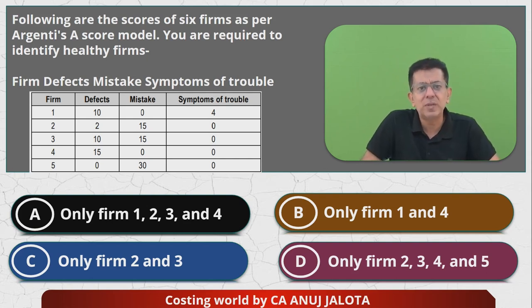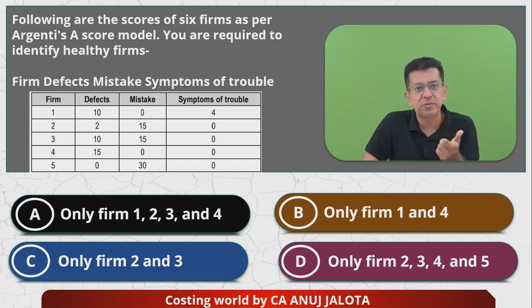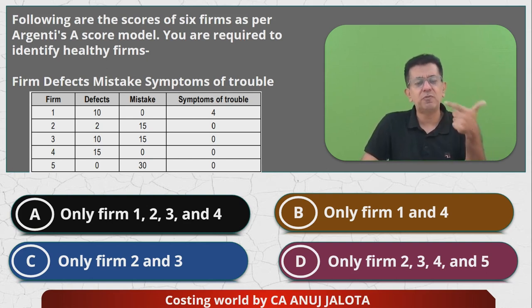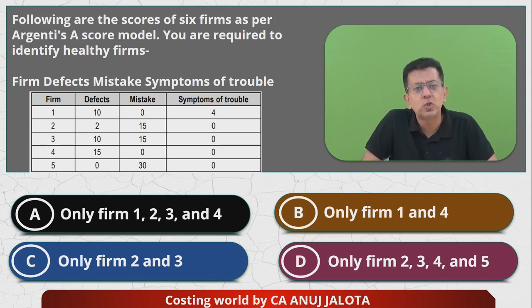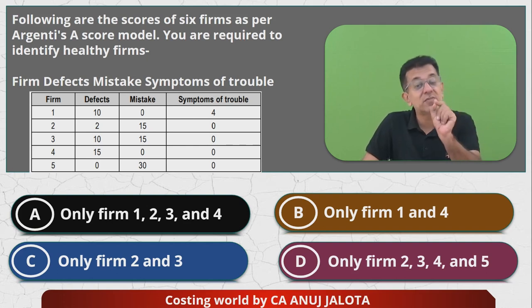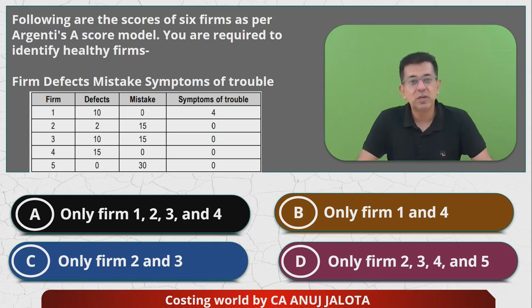Form 2 can be classified as healthy because the defect score is 2 (maximum is 10) and mistake score is 15 (exactly at the maximum of 15), so Form 2 is healthy. Form 3 scores are 10, 15, and 0 — exactly meeting the criteria — so Form 3 is also healthy. Form 4 is 15, 0, 0 — but defects should be maximum 10, so the defects criterion is broken and Form 4 is not healthy. Form 5 has a mistakes score of 30, which exceeds the maximum of 15, so Form 5 is also not healthy.